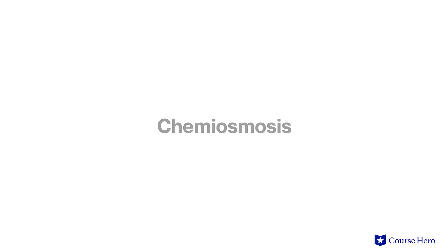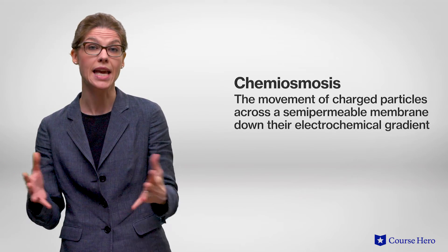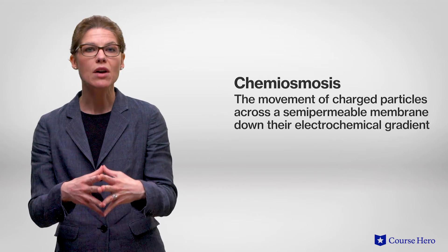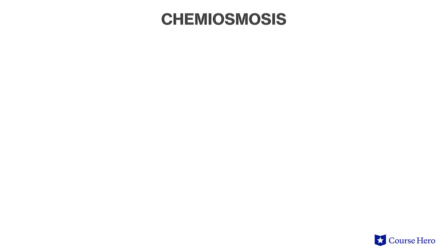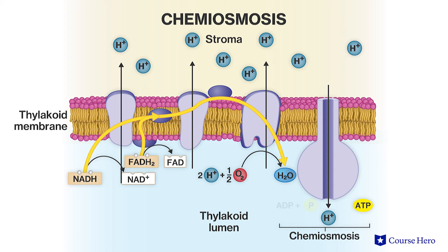The water splitting reaction that takes place in photosystem II results in the pumping of protons to the thylakoid lumen, which results in the production of ATP by chemiosmosis. Chemiosmosis is the movement of charged particles — protons in this case — across a semipermeable membrane down the electrochemical gradient. This chemical potential is used by the enzyme ATP synthase, found in the thylakoid membrane, to generate ATP from ADP. Hydrogen ions diffuse down the concentration gradient, and this is coupled by ATP synthase to the phosphorylation of ADP, resulting in ATP synthesis.